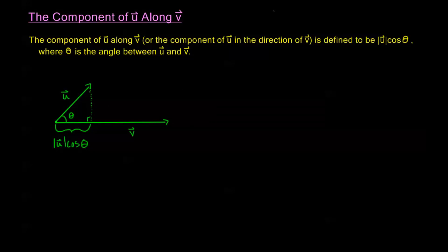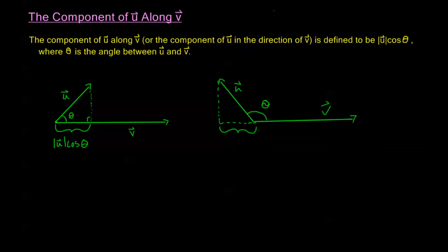It doesn't need to be an acute angle. We could have an obtuse angle — if this is my u and this is my v, then the angle theta is between pi over 2 and pi. My component of u along v is going to be this section, but it's not going to be positive. The magnitude of u times cosine theta gives a negative result since cosine is negative here. If the component is negative a, that means I've traveled a distance of a along v but in the negative direction.